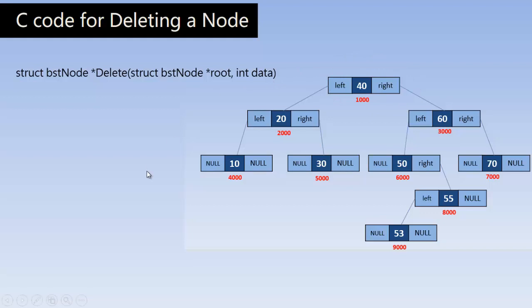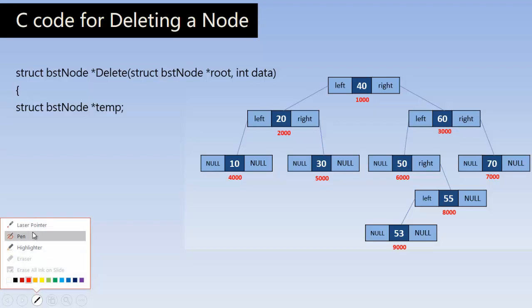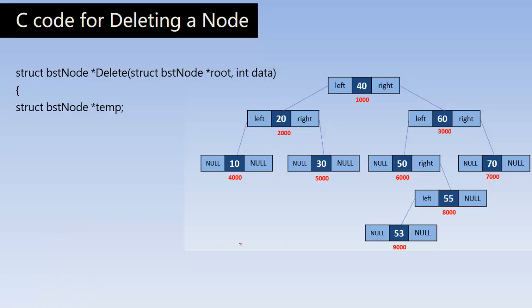Before deleting the node, we first have to find it. Once we find the node, we can easily delete it. So let us understand the code for finding the node. I have declared a temporary variable called temp, which holds the address of a node.